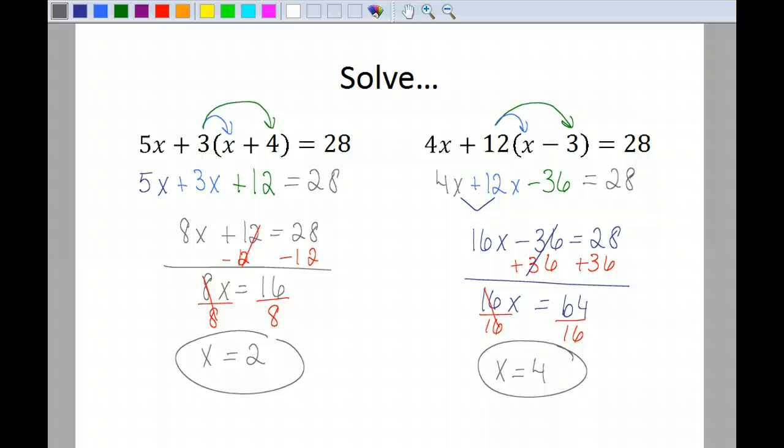Okay, so when you've solved this one, you remember to distribute the 12 to the x and the positive 12 to the negative 3. Then you should have combined your like terms. Now you're going to add 36 to both sides because this 36 was negative. So you end up with 16x is equal to 64. The inverse operation of multiplication is division, and you end up with x is equal to 4.